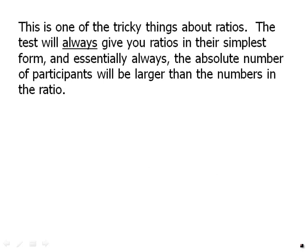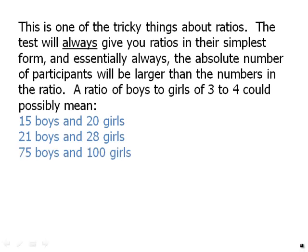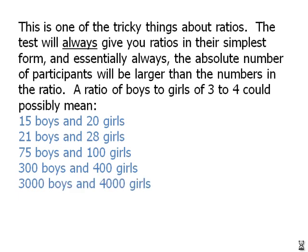This is one of the tricky things about ratios. The test will always give you ratios in their simplest form and essentially always, the absolute number of participants will be larger than the numbers in the ratio. So for example, ratio of boys to girls is 3 to 4 could possibly mean that we have 15 boys and 20 girls, or 21 boys and 28 girls, or 75 boys and 100 girls, or 300 boys and 400 girls, or 3000 boys and 4000 girls. In other words, we have no idea simply from the ratio what the absolute size of the group could be. The absolute size of the group could be anything.